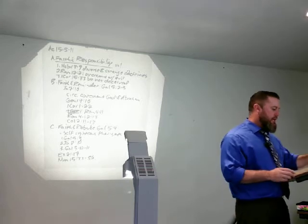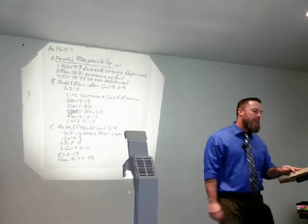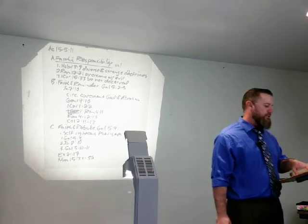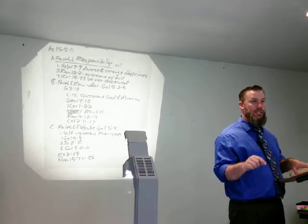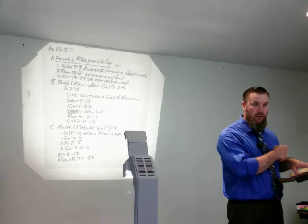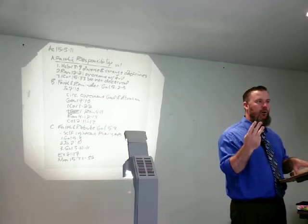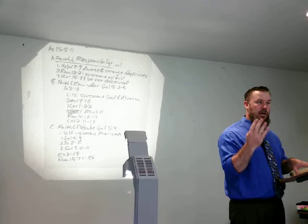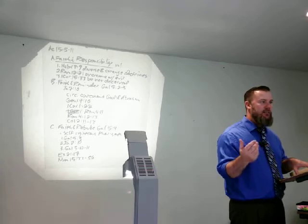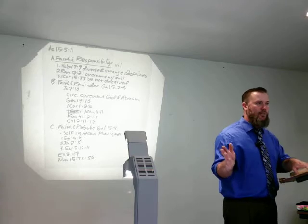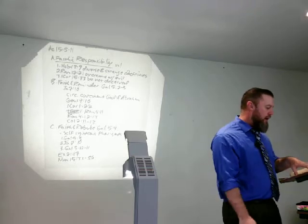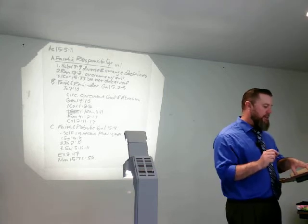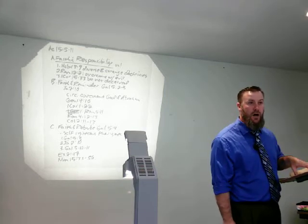So Romans 10:3-4 says this: For they being ignorant of God's righteousness and going about to establish their own righteousness. This is what they're doing through Sabbaths, feasts, wearing funny looking clothes, cutting their hair different. They want to wear Nikes and drink purple Kool-Aid. They want to do all these weird things. And they're going about to establish their own righteousness. Notice this: Have not submitted themselves unto the righteousness of God.